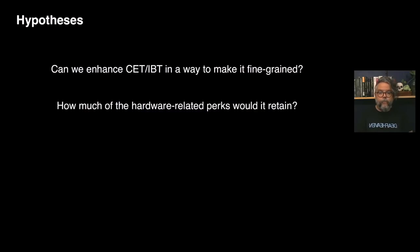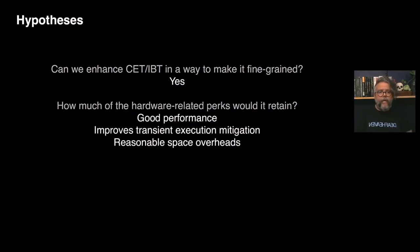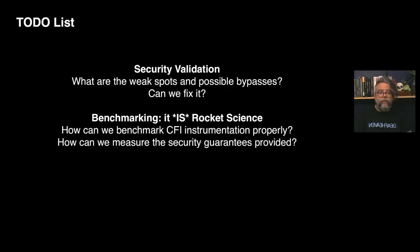Now some conclusions. At the beginning of the talk, we brought up two hypotheses: can we enhance CET-IBT in a way to make it fine-grained, and if yes, how much of the hardware-related perks would it retain? The answer for the first question is yes. Regarding hardware-related perks, FineIBT presents good performance especially compared to Clang-CFI, it improves the transient execution mitigations provided by the regular IBT feature, and it presents reasonable space overheads. For the deeper security validation: most CFI implementations check the policy in the caller before the branch executes, but in FineIBT the check happens in the callee. Is this a problem? Can it be fixed? Also, what about mixing FineIBT and non-FineIBT DSOs — it certainly adds flexibility but should also introduce weak spots.